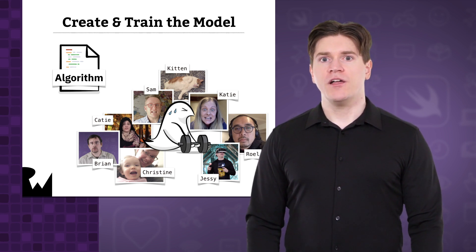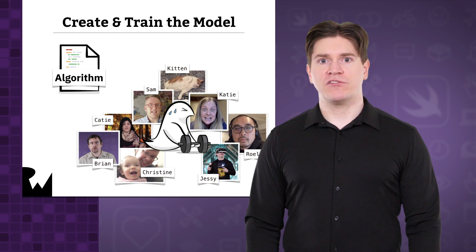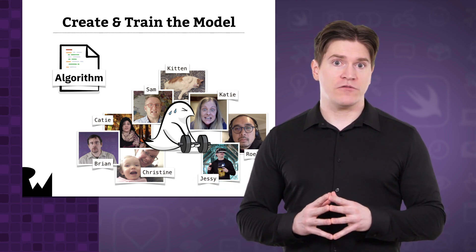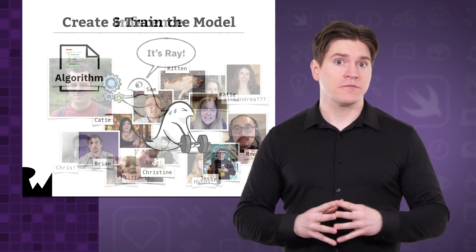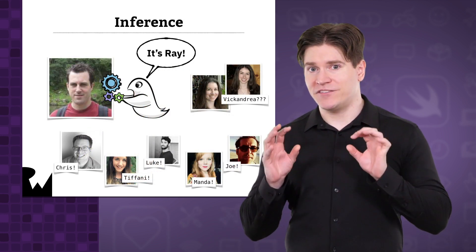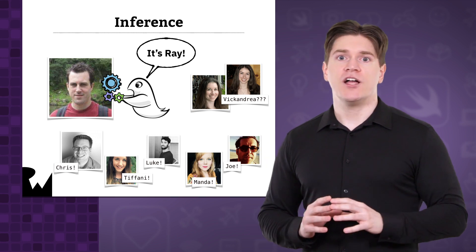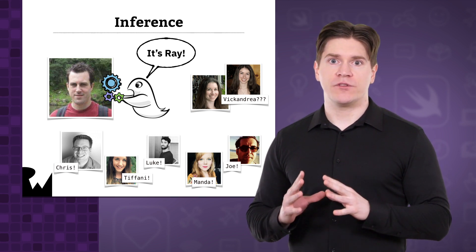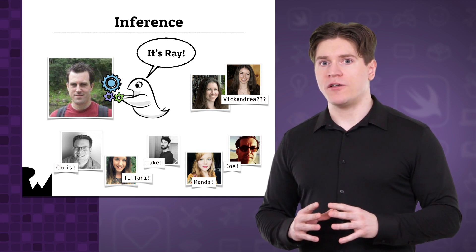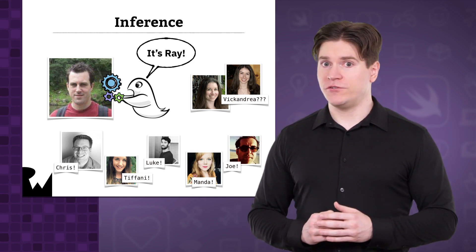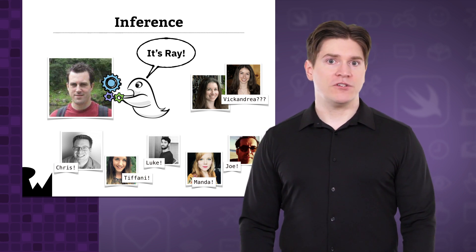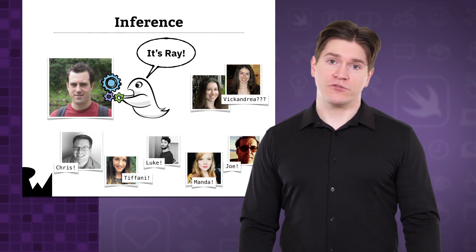For the face recognition model, the training examples would be photos of your friends, as well as all the things you want the model to learn from those photos, such as their names. After successful training, you could say that the model contains the knowledge about the problem the machine learning algorithm managed to extract from the training examples. Once you have a trained model, you can ask it questions for which you don't yet know the answer. This is called inference, using the trained model to make predictions or draw conclusions.